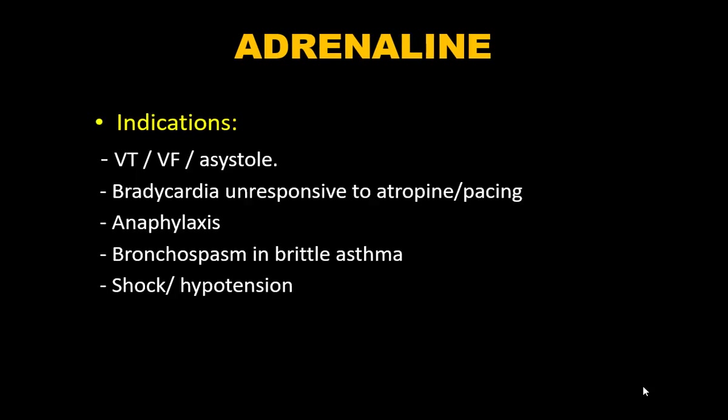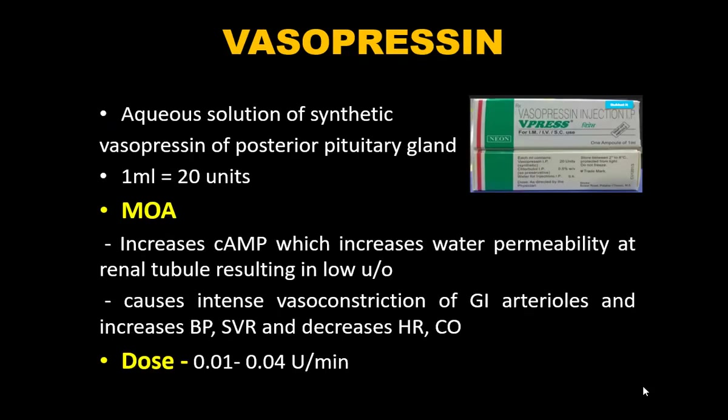Per ACLS guidelines, adrenaline is used in VT/VF and asystole. It is also used for bradycardia unresponsive to atropine or pacing — given as an infusion. In anaphylaxis it is given IV and IM in different dilutions. In brittle asthma unresponsive to conventional beta-agonists, adrenaline is used. In shock and hypotension, it is an adjunct to norepinephrine.